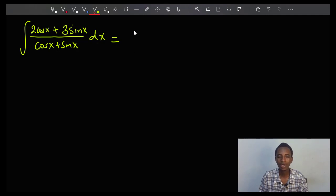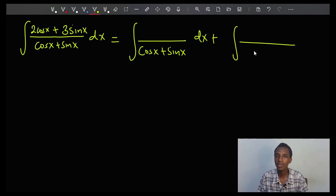The way this works is that I'm going to split this numerator into two integrals. So I keep the denominator, cos x plus sin x, with respect to x, plus another integral still with the same denominator, cos x plus sin x, dx.